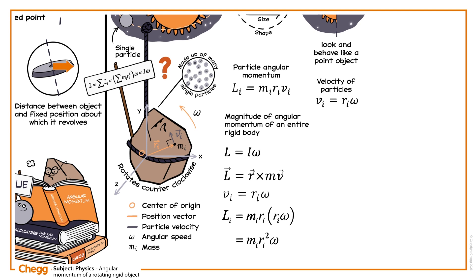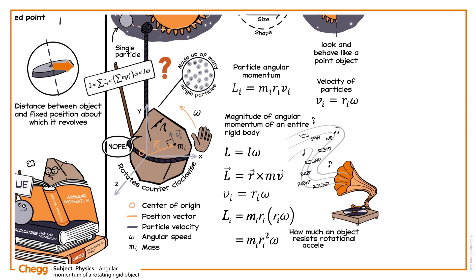I is defined as the moment of inertia of the object, a measure of how much an object resists rotational acceleration.